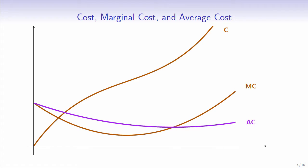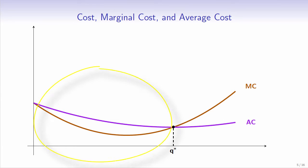Here's average cost. Average costs initially decline, then increase. Let's focus on marginal and average cost. Notice that to the left of Q star, marginal cost is below average cost. So average costs decline when output is increased because fixed costs are allocated to larger amounts of output.